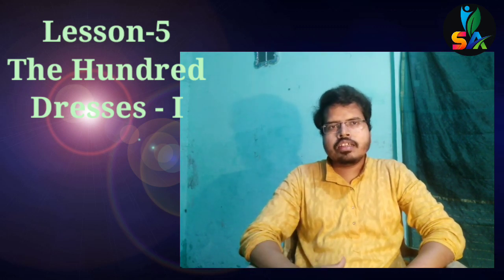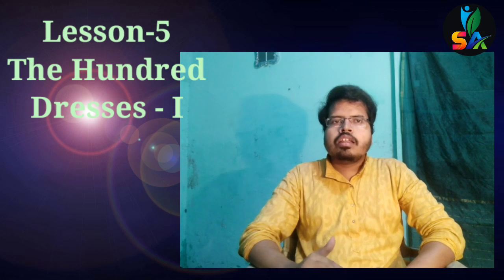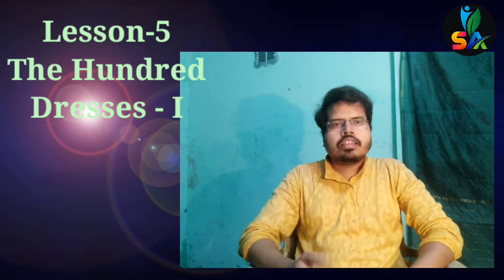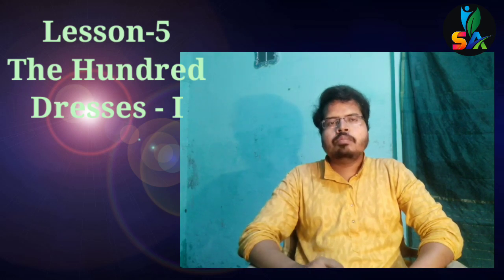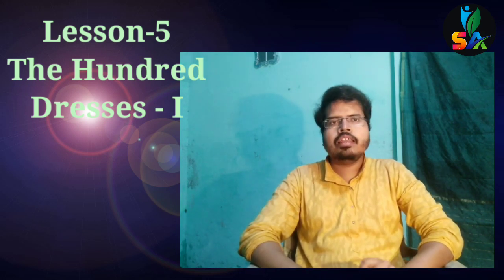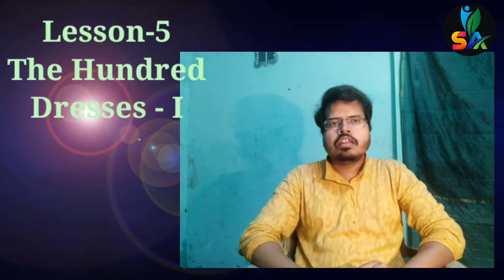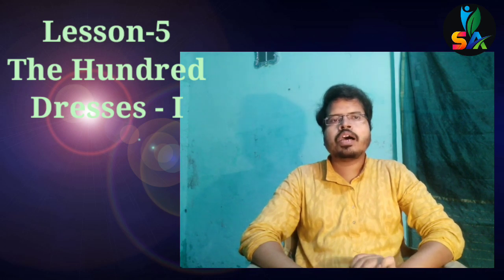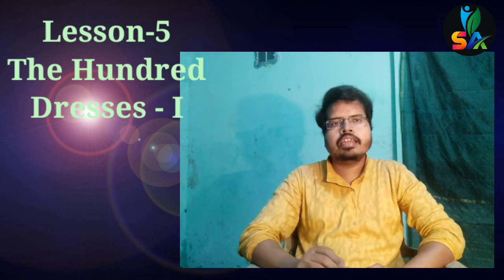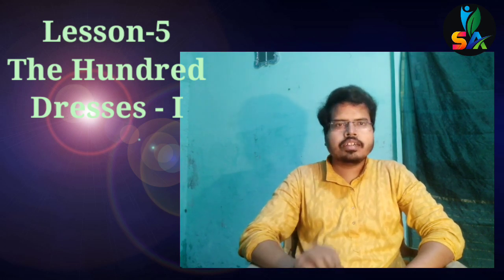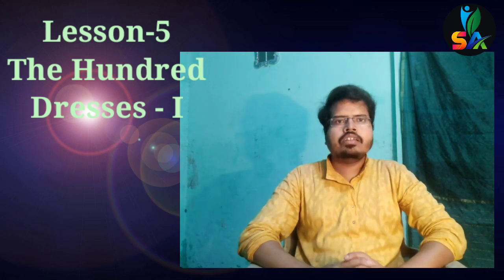The second character is Peggy. Peggy was a very popular, pretty, and intelligent girl in the school, and everyone loved her. However, she was the leader of the group that asked Wenda Petrasangi questions and teased her about her dresses.